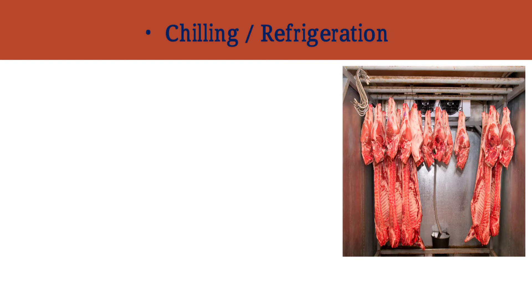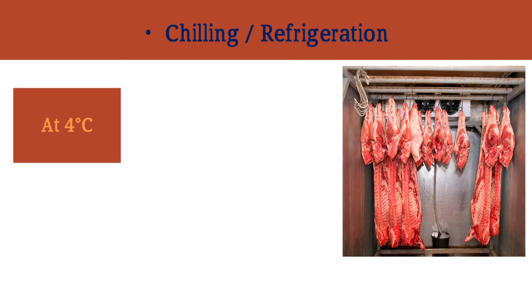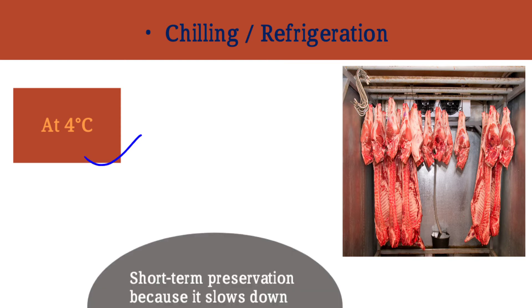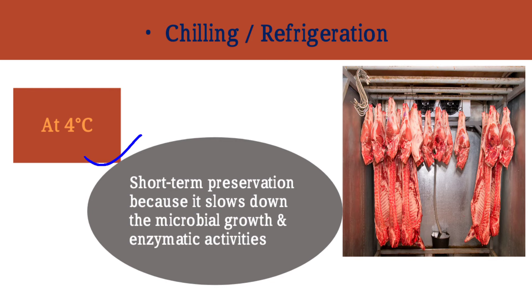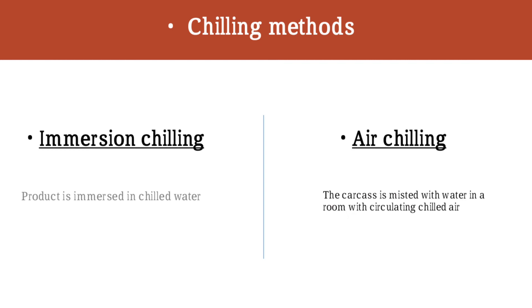The first method is chilling or refrigeration. Chilling is done at a temperature of 4 degrees centigrade, or up to 10 degrees centigrade, but mostly at 4 degrees centigrade. This method is applied for short-term preservation as it slows down microbial growth and enzymatic activities. There are two methods: immersion chilling, where the meat is immersed in chilled water, and air chilling, where the carcass is misted with water in a room with circulating chilled air.